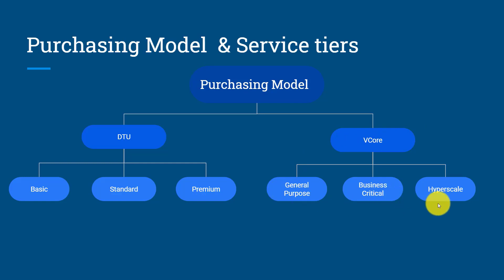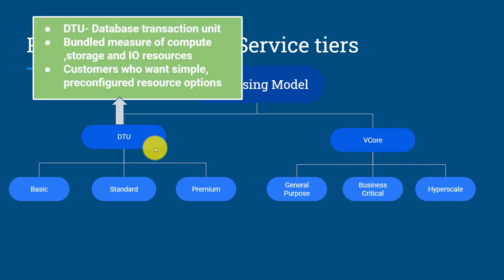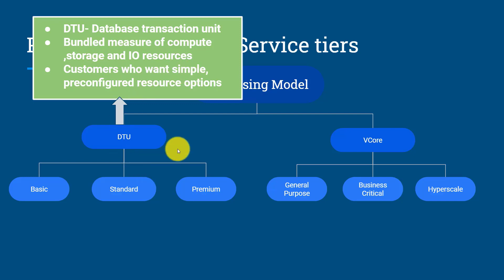DTU means database transaction unit. It's a measurement unit where you can measure your performance in a DTU instead of CPU and memory. Each DTU level and service tier provides some predictable performance — the higher the DTU, the more performance you get. It's a bundle measure of compute, storage, and IO resources. Customers who want simple pre-configured resource options can go with the DTU purchasing model.